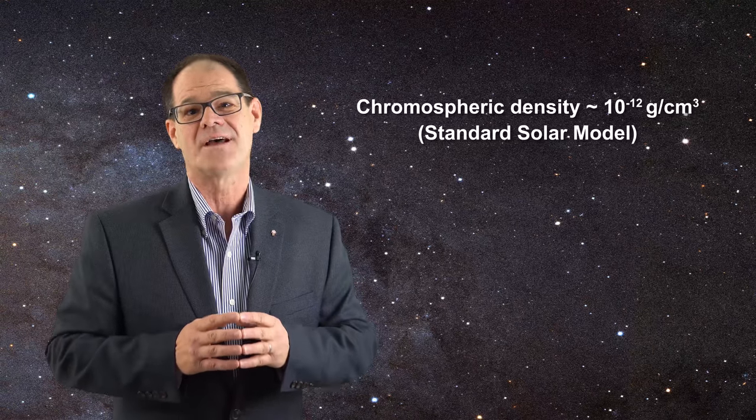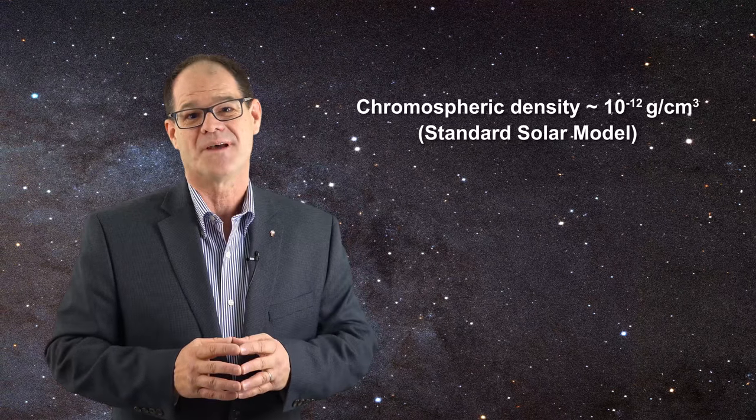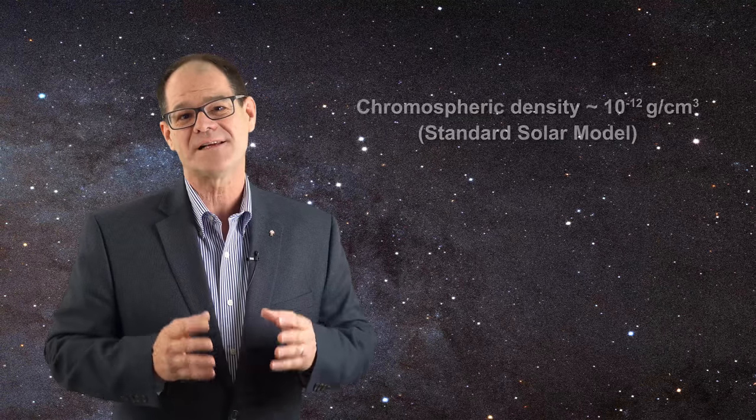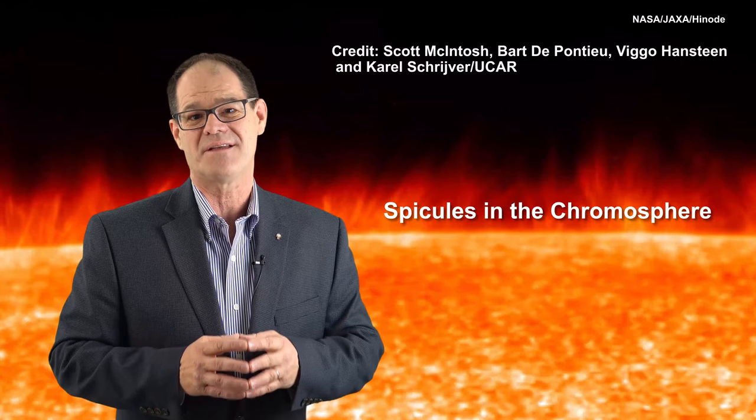In the standard solar model, the chromosphere has a density of only 10 to the minus 12 grams per centimeter cubed. Such a density is not reasonable, of course, as we clearly see condensed matter in the chromosphere in the form of spicules.